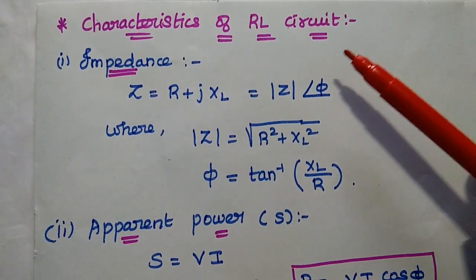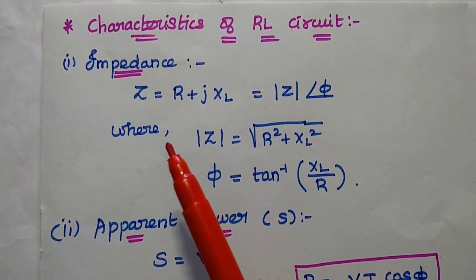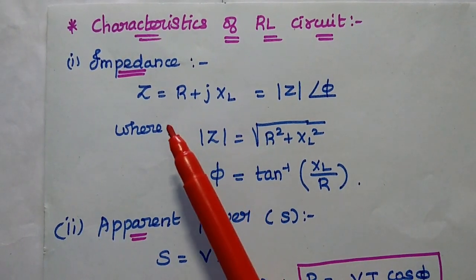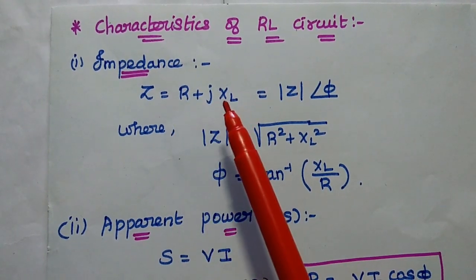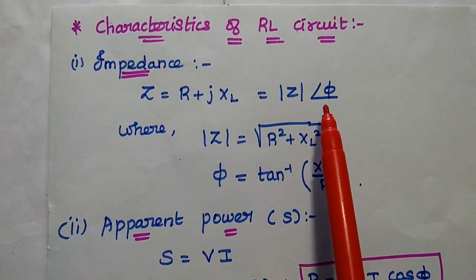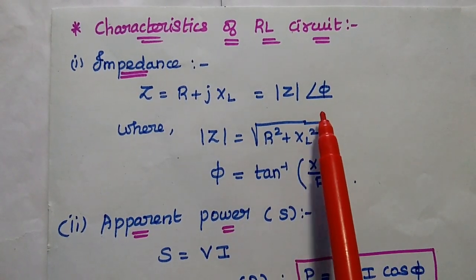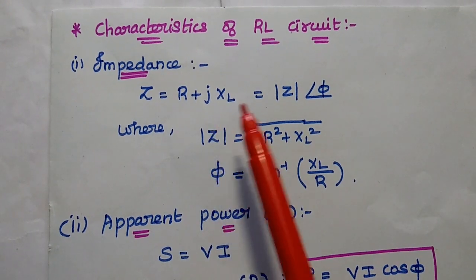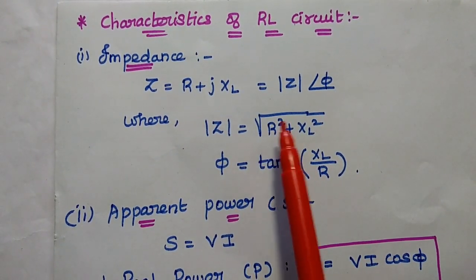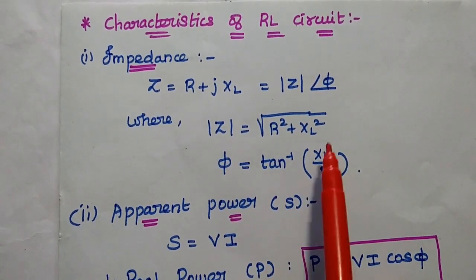Next, we discuss the characteristics of the RL series circuit. The important parameter is the impedance Z, which represents the total resistivity of the circuit, having both resistance and reactance values. Z equals R plus jXL in rectangular form. It can also be written in polar form as the magnitude of Z with a phase angle φ, where the magnitude is the square root of R squared plus XL squared, and the phase angle is the inverse tangent of XL over R.